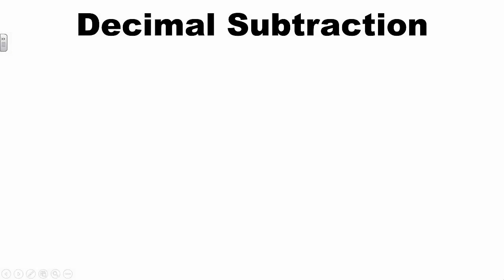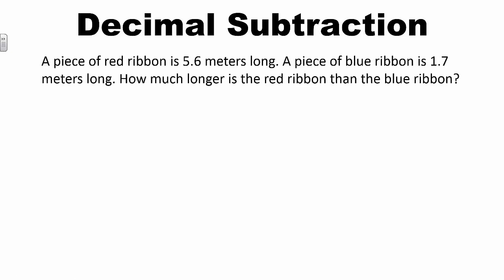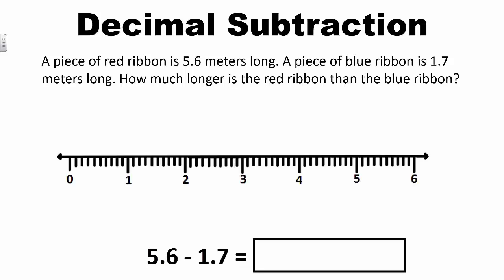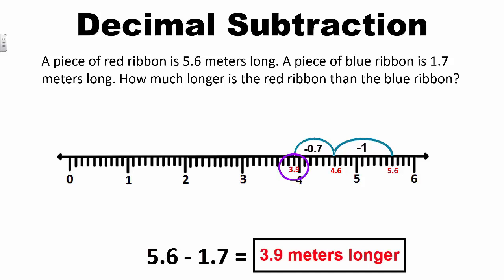A number line can also be used to represent subtraction problems. A piece of red ribbon is 5 and 6 tenths meters long and a piece of blue ribbon is 1 and 7 tenths meters long. How much longer is the red ribbon than the blue ribbon? To find the difference, I need to subtract 1 and 7 tenths from 5 and 6 tenths. On the number line, starting at 5 and 6 tenths, if I subtract 1, I have 4 and 6 tenths. If I subtract 7 tenths more, I get a total difference of 3 and 9 tenths. Therefore, the red ribbon is 3 and 9 tenths meters longer than the blue ribbon.